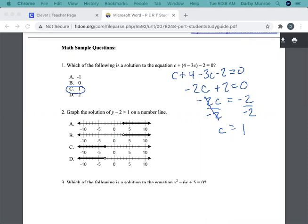For number 2, graph the solution of Y minus 2 is greater than 1 on a number line. So I'm going to do this problem in orange here. Y minus 2 is greater than 1. So I'm going to add 2 to both sides to get the Y by itself. The inequality sign does not change. Y is greater than 3. So it's not going to be C or D because it's greater than. The only difference is A has a closed circle, meaning it's greater than or equal to. B has an open circle. An open circle means it's greater than. It does not include the number. So B would be the correct answer.